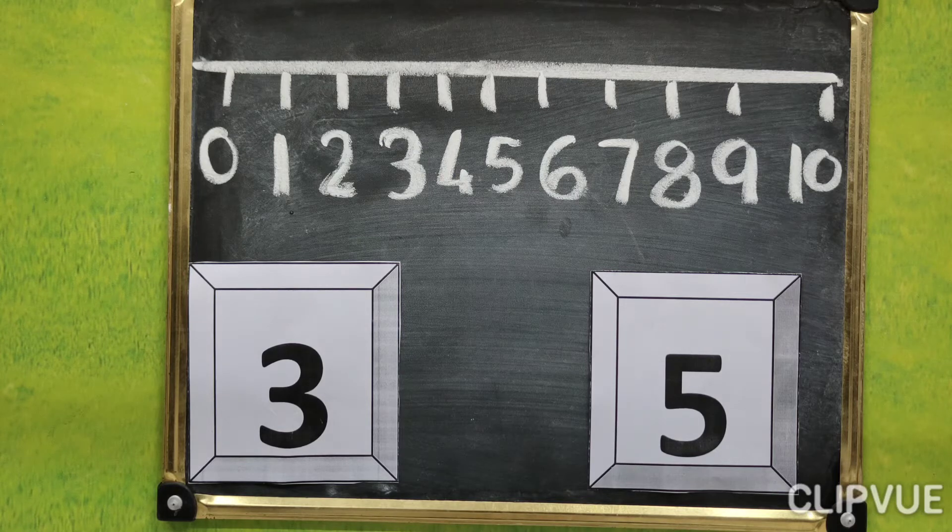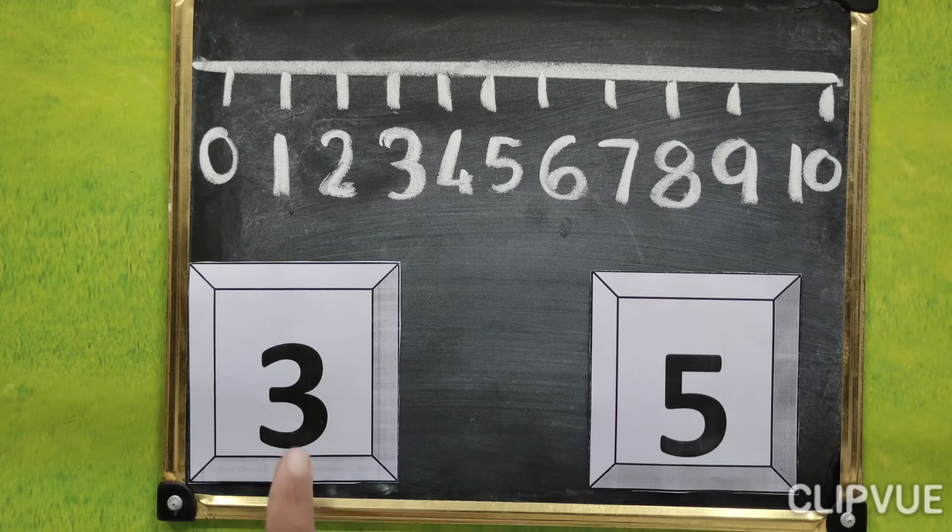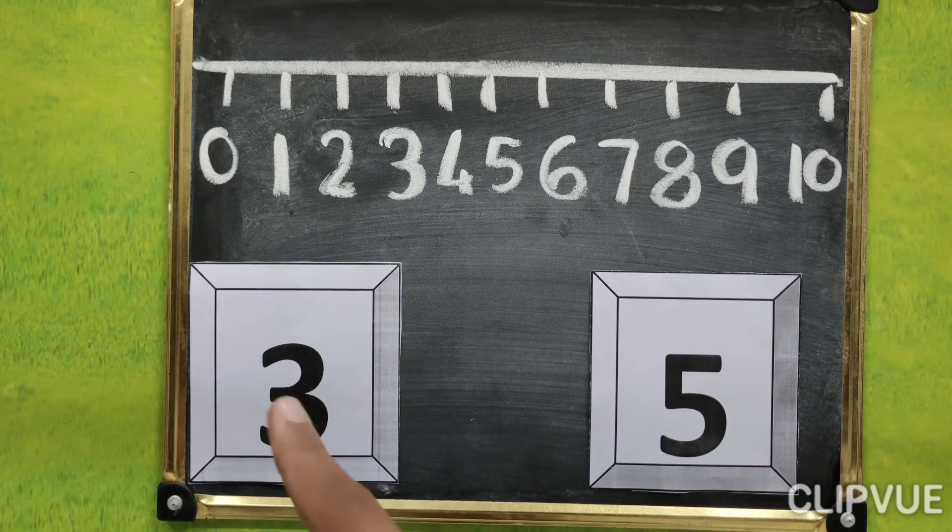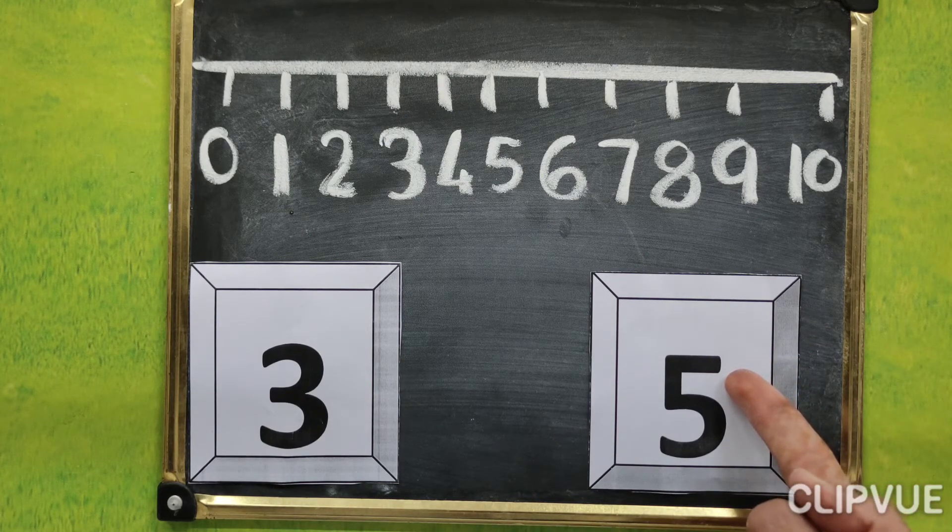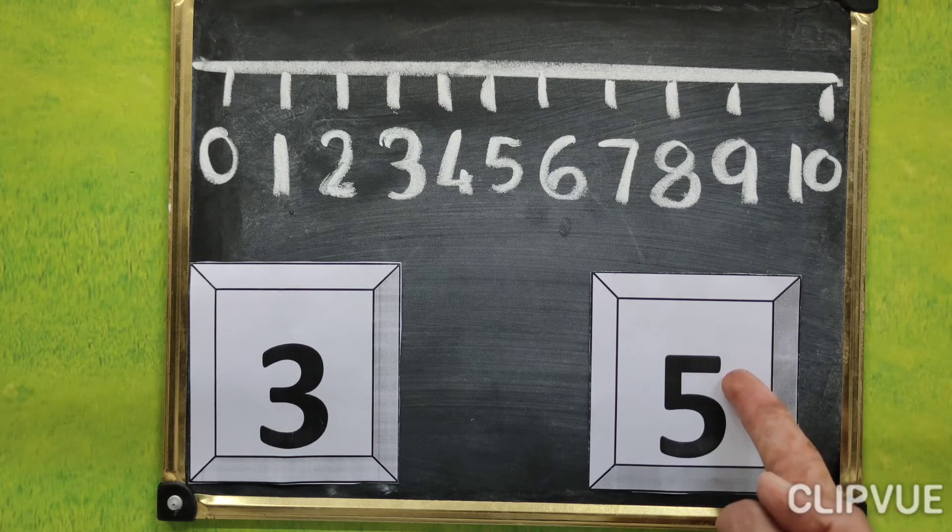So which number comes first? 3 or 5? 3. And which number comes next? 5. So 5 is big number.